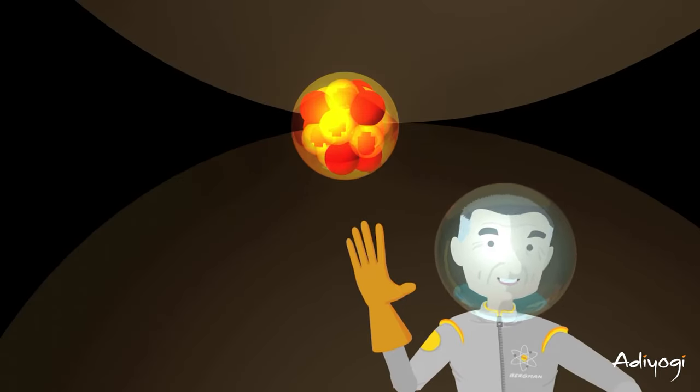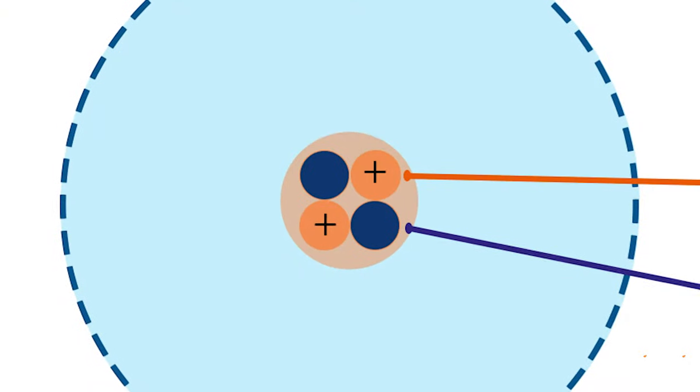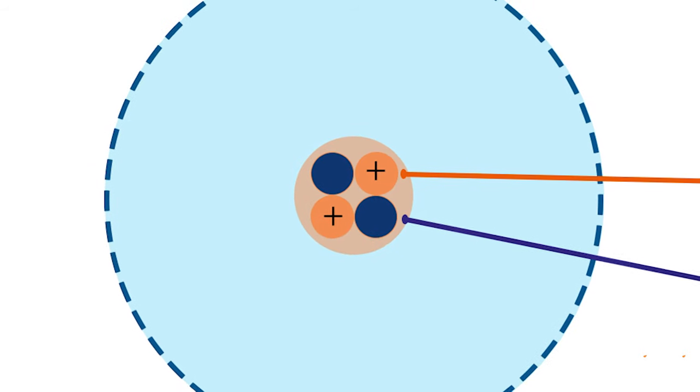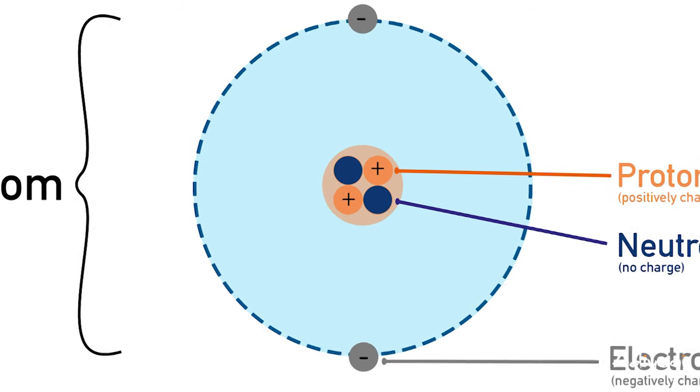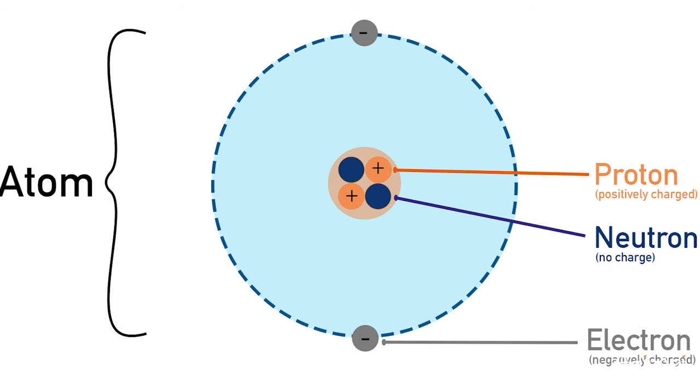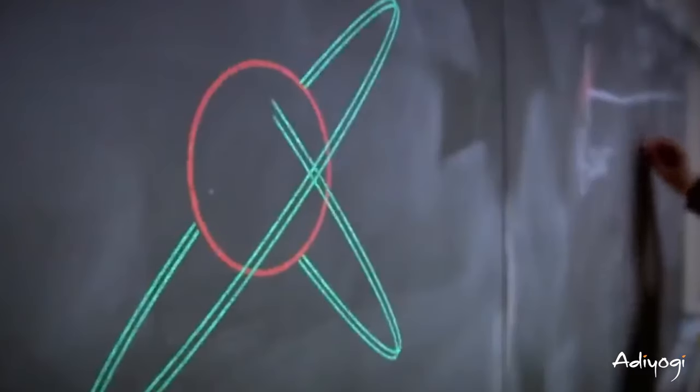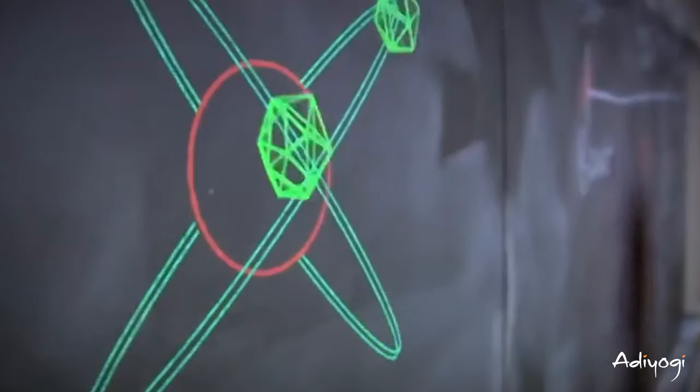The nucleus, a dense core at the atom center, houses protons and neutrons bound together by the strong force. Protons bear a positive charge, while neutrons carry no charge. Orbiting this nucleus are electrons, existing in distinct energy levels, dancing in a probabilistic cloud around the nucleus due to their wave-like structure. The quantum realm challenges our intuition, introducing concepts like superposition and uncertainty. The electron cloud represents the probability distribution of finding an electron in a particular region.